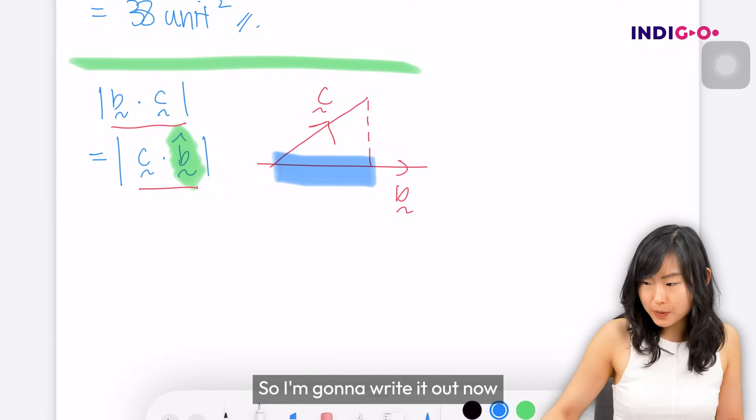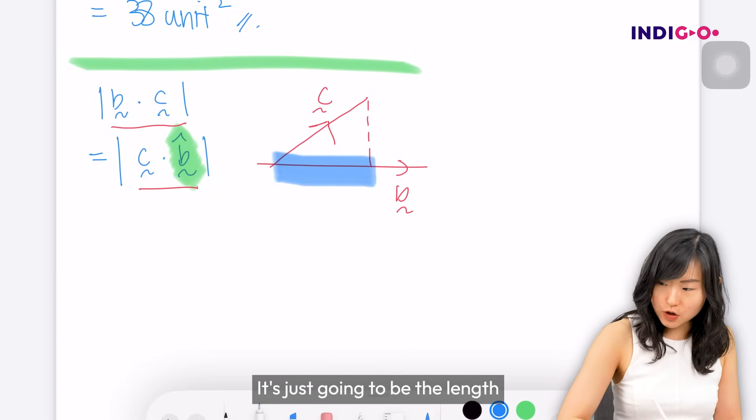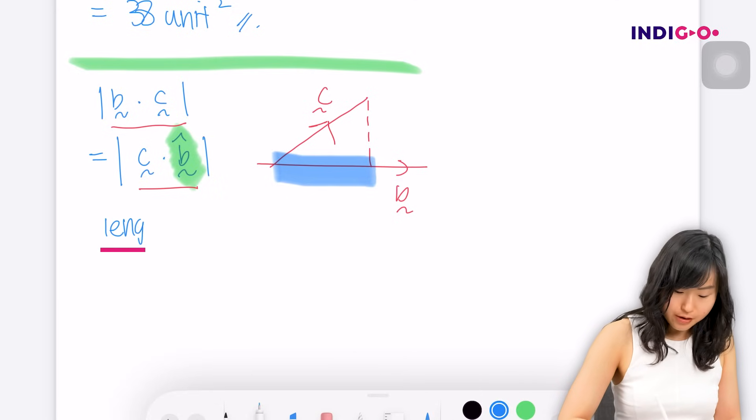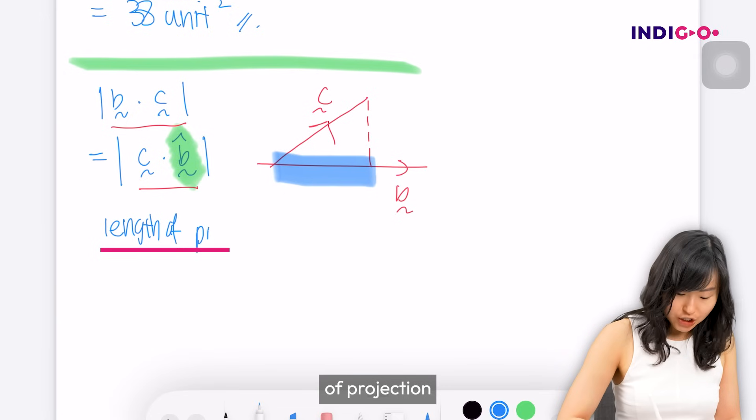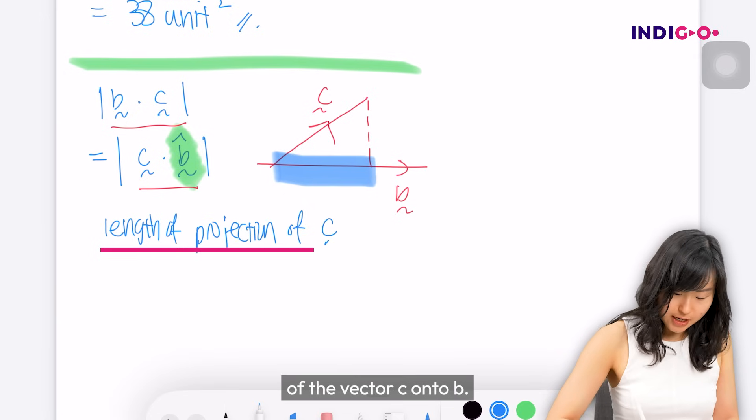So I'm going to write it out now. We're putting everything together. It's just going to be the length of projection of the vector c onto b.